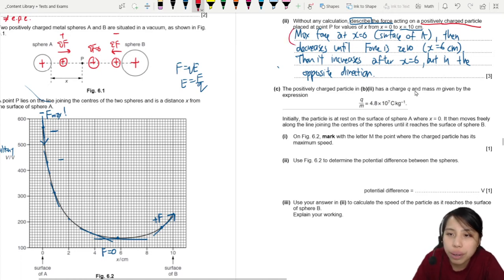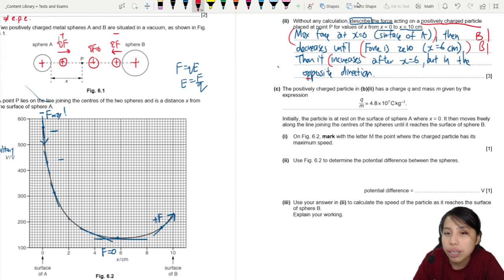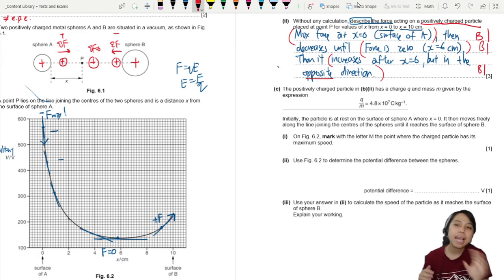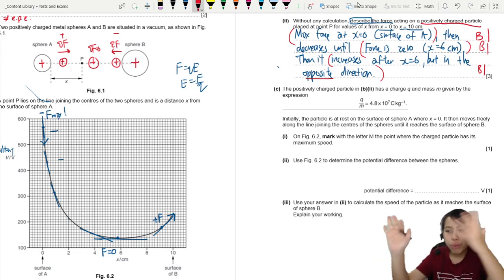So one mark is for maximum force at the surface, that's one. One mark is zero, where is it zero? And one mark, increase in the opposite direction. That is how you can explain the full detail of what's happening with this graph, how is the particle experiencing a force?